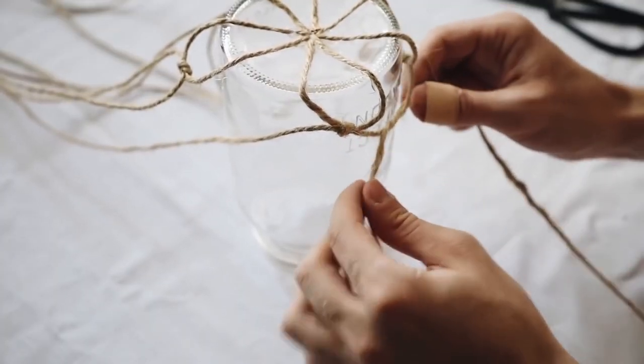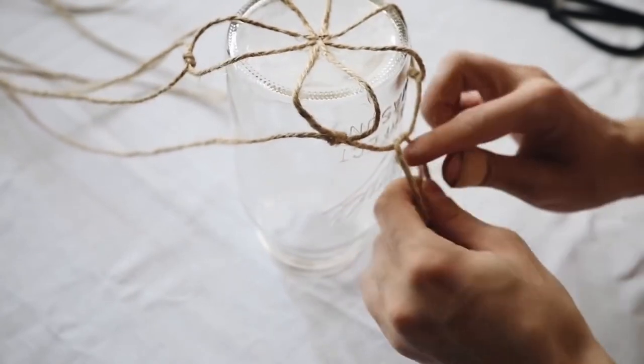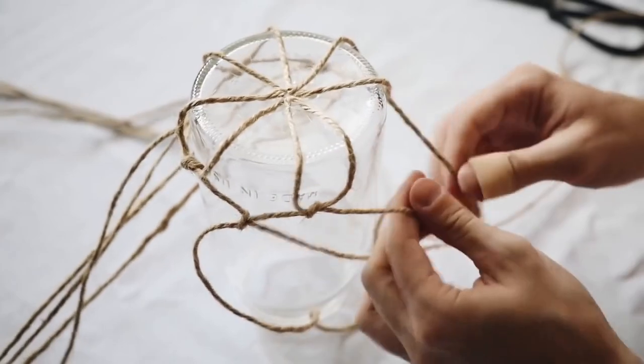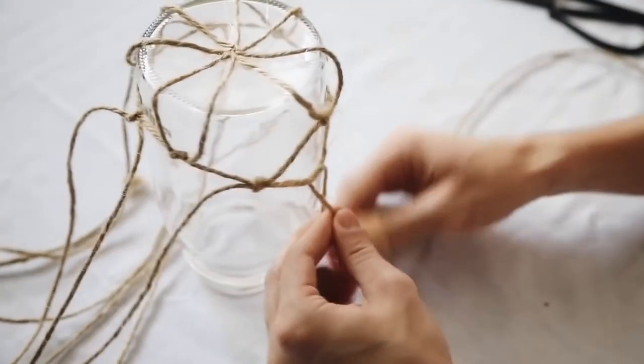We grab the neighboring strand and connect it to a knot that was neighboring it as well, and you're just going to be repeating this process until you reach the top rim of the jar.